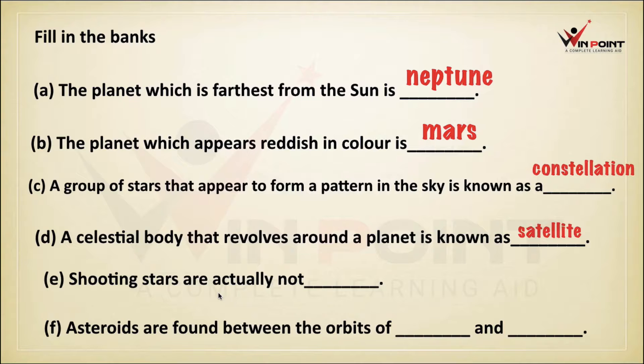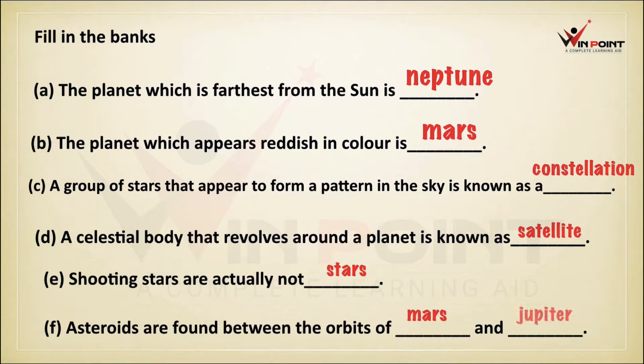Shooting stars are actually not stars. Asteroids are found between the orbits of Mars and Jupiter.